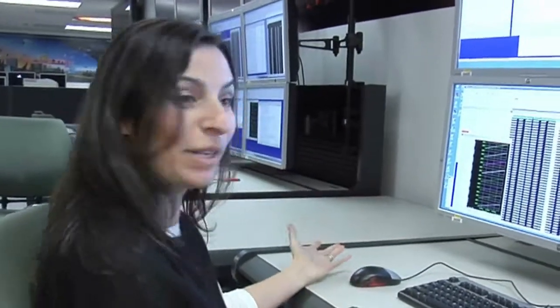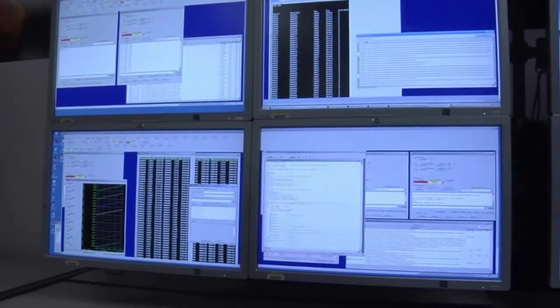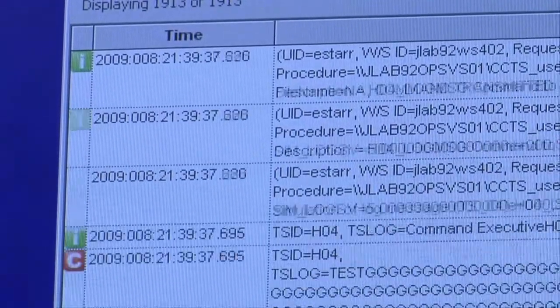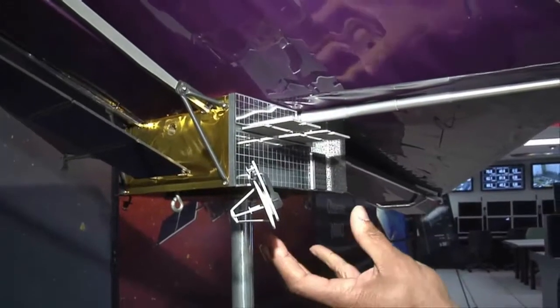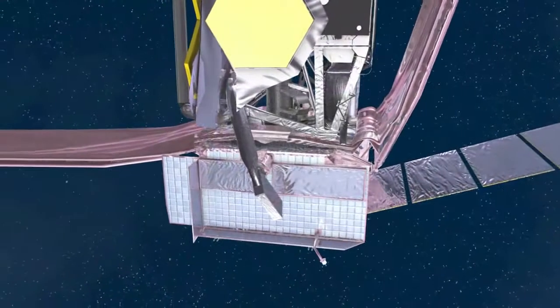Work also is progressing on development of the Webb Telescope's ground system at Northrop Grumman. The ground system simulates telemetry from the spacecraft so engineers can perform what-if scenarios to solve any potential on-orbit problems.